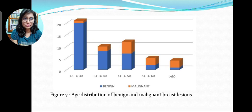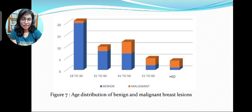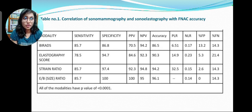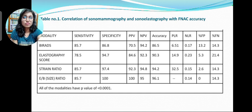This is the age distribution of benign and malignant lesions, showing that in the younger age group benign lesions are more common, while in the older age group malignant lesions are more common. This table shows the correlation of sonomammography and sonoelastography with diagnostic accuracy. The modalities are BI-RADS, elastography score, strain ratio, and size ratio, all of which have a p-value of less than 0.0001.